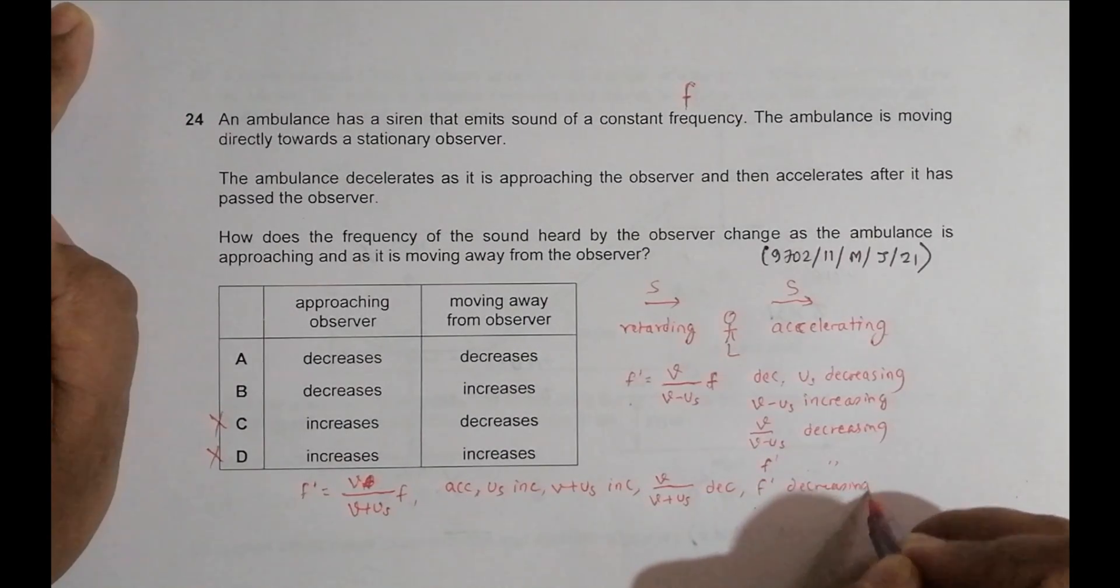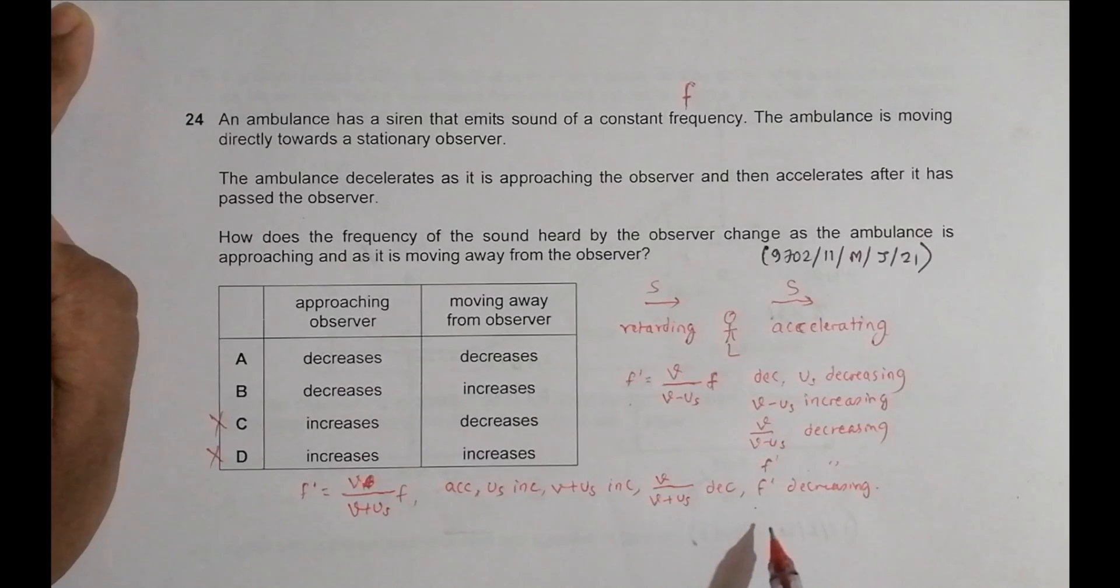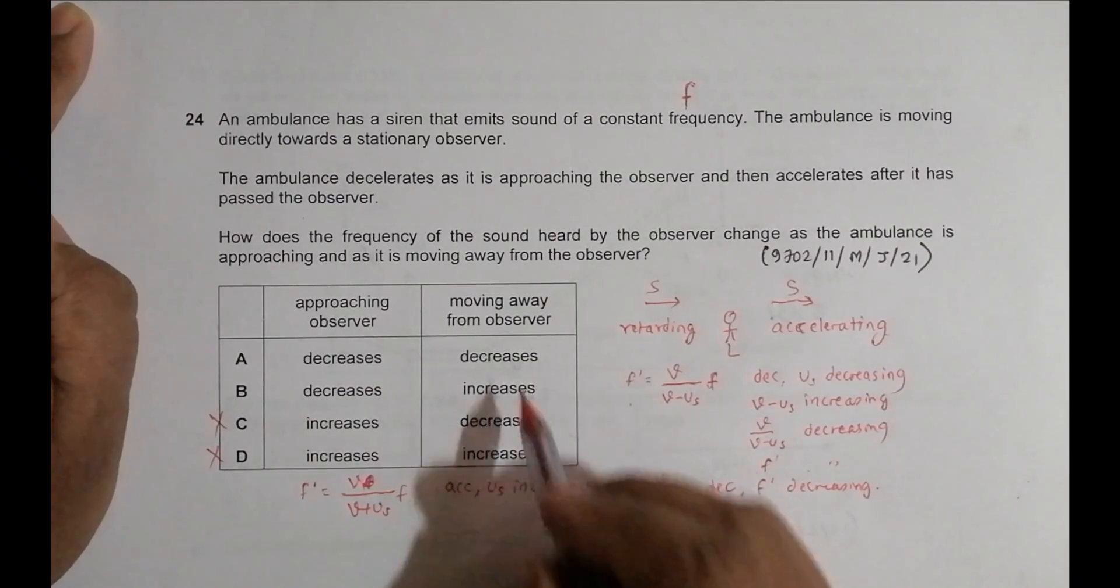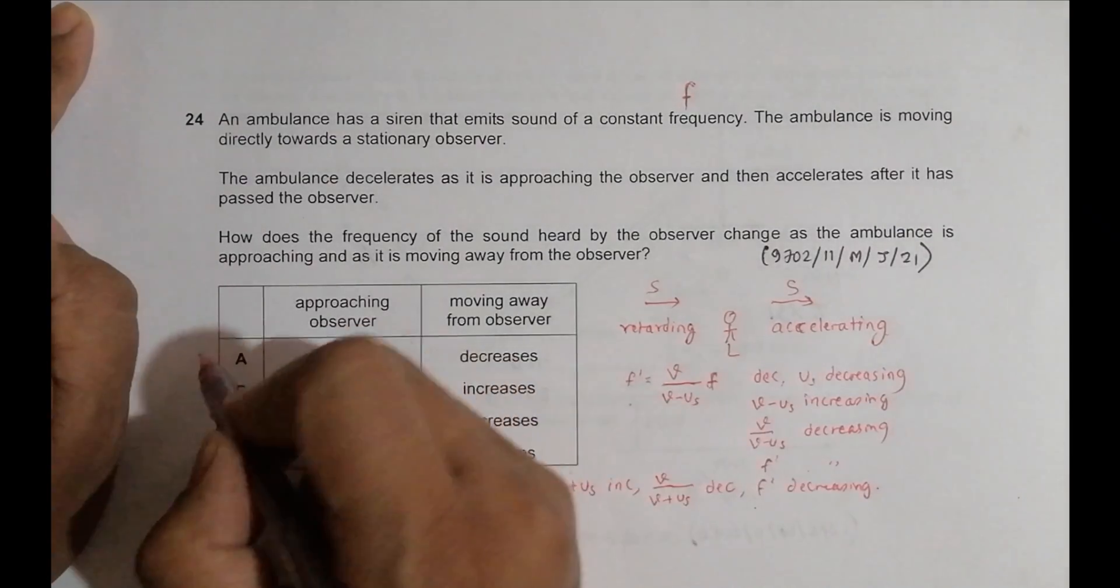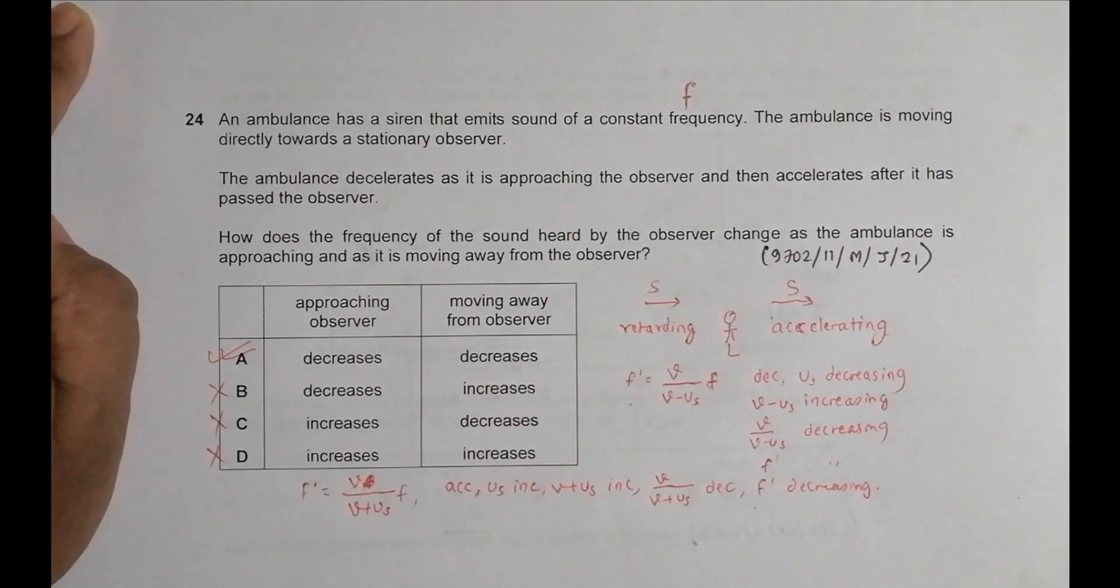And this means F prime will be decreasing. F prime is again decreasing. So that means what we have here will be decreases. So that's why choice number A should be correct and choice number B is incorrect.